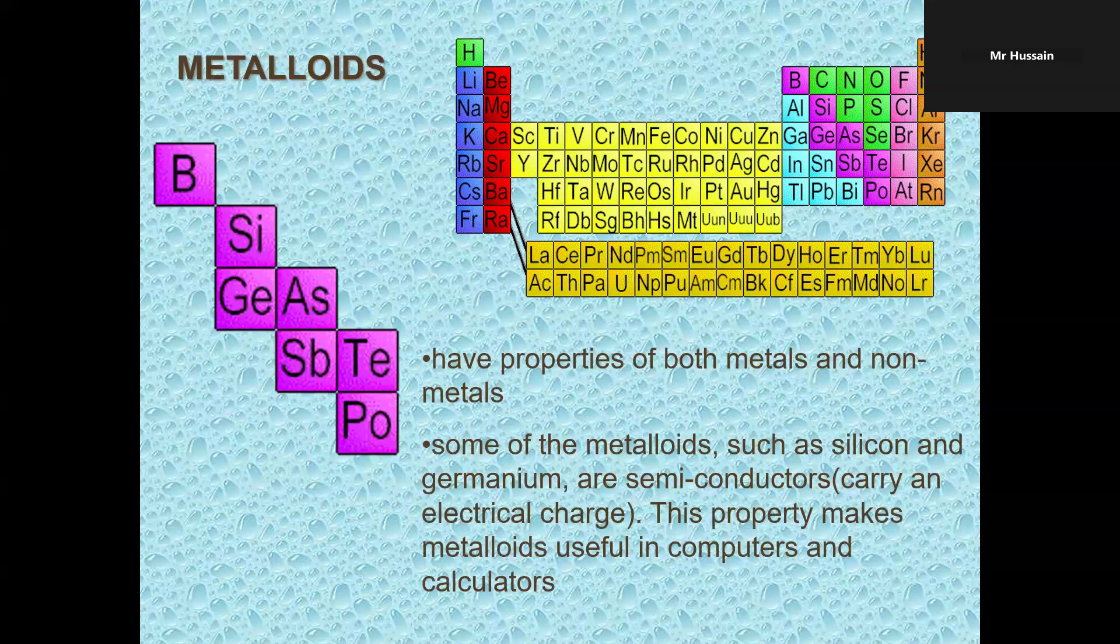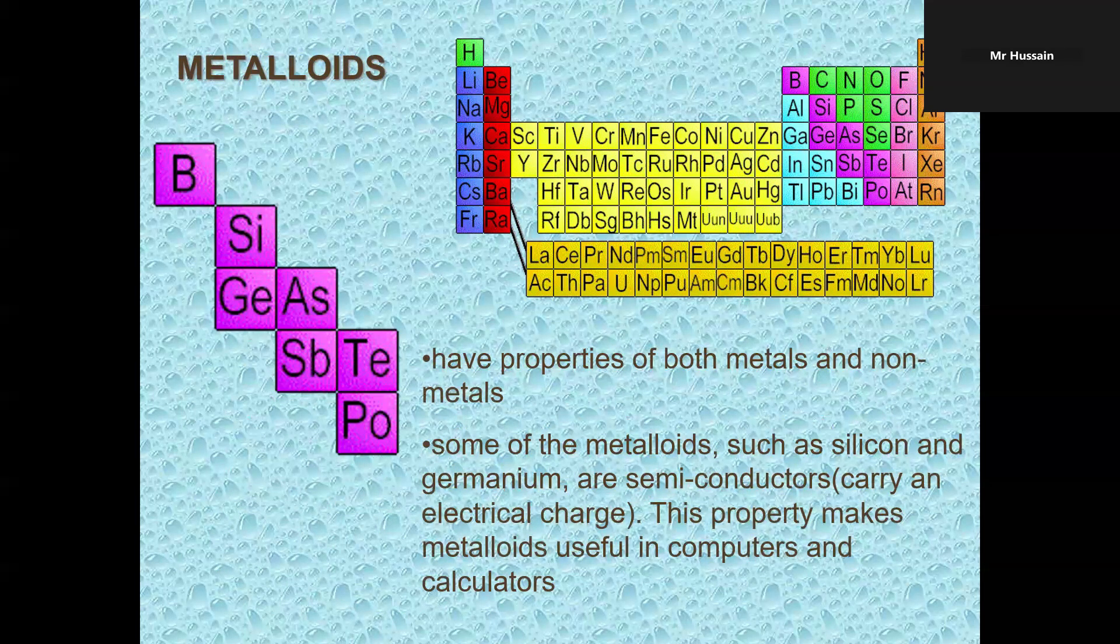Metalloids. These elements: boron, silicon, germanium, arsenic, antimony, tellurium, polonium. These elements are metalloids. Metalloids have properties of both metals and non-metals. Some metalloids, such as silicon and germanium, are semiconductors. It means they can conduct electricity. This property makes metalloids useful in computers and calculators.